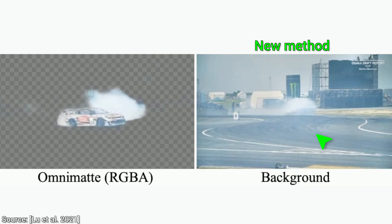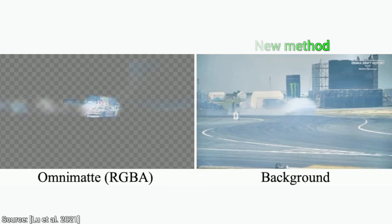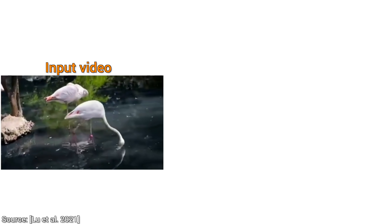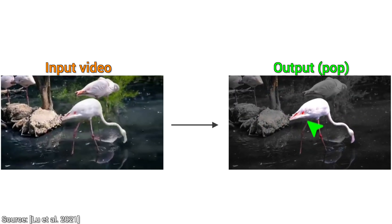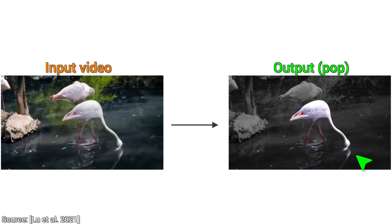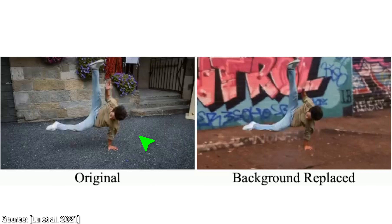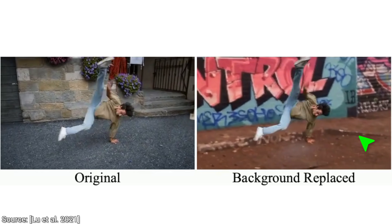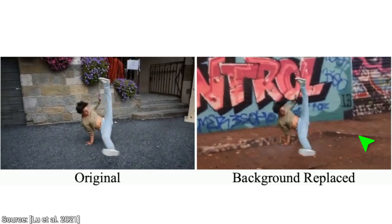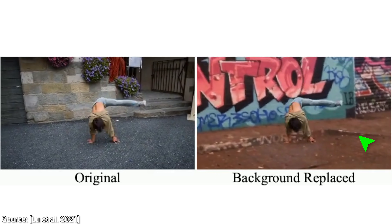So, what are those more magical things that this opens up? Watch carefully — it can make the colors pop here. And remember, it can find the reflections of the flamingo, so it keeps not only the flamingo, but the reflection of the flamingo in color as well. Absolutely amazing. And if we can find the background of the video, we can even change the background. This works even in the presence of a moving camera, which is a challenging problem.